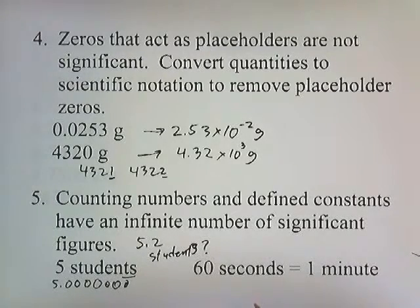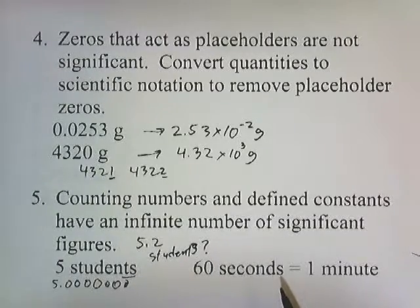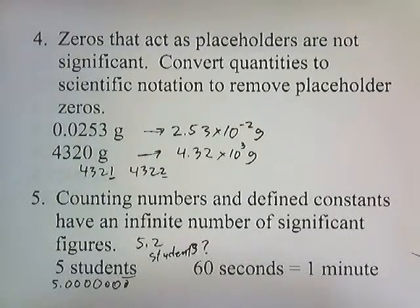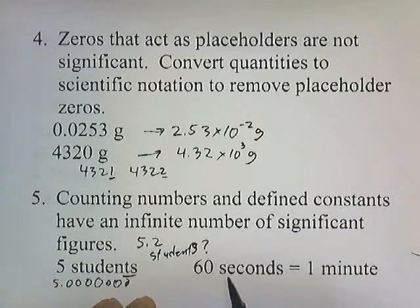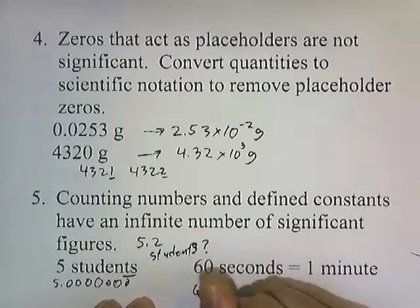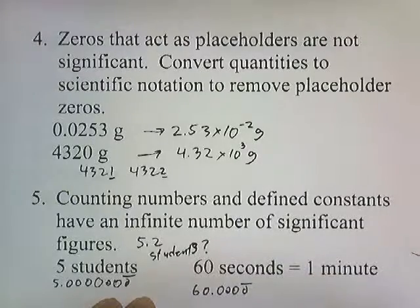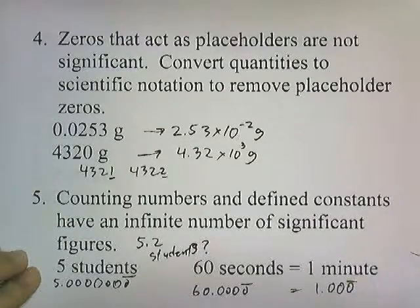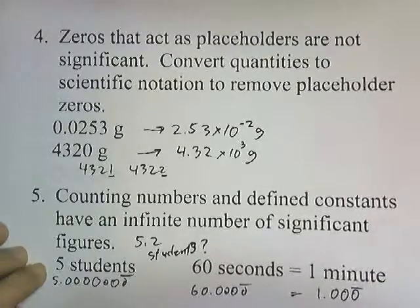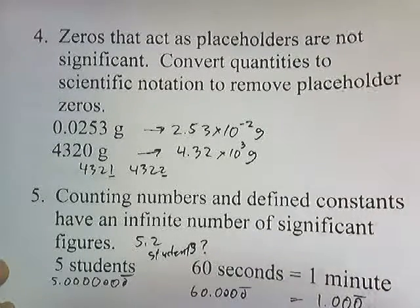How can you have two-tenths of a student? There are 5.75 students in the classroom right now — that doesn't make sense. It's either the student is there or the student's not there. So if it's a counting number, it has an infinite number of significant figures. Anytime you see a defined equality, it's an infinite number of significant digits. So when you define 60 seconds as equal to 1 minute, we assume that it's 60.000 all the way to infinity equal to 1.000 all the way to infinity. Counting numbers and defined values have an infinite number of significant digits.